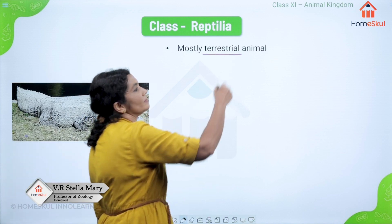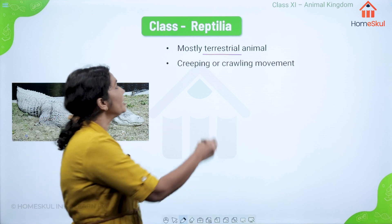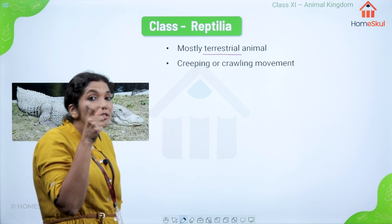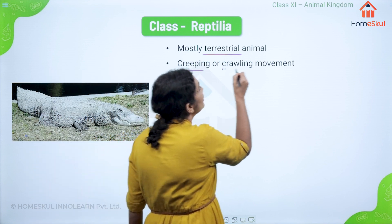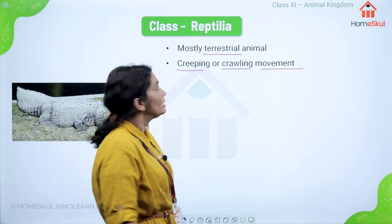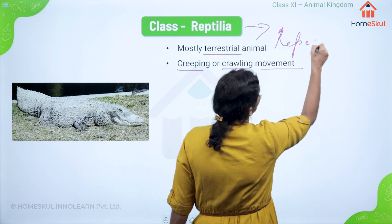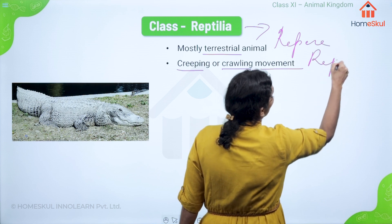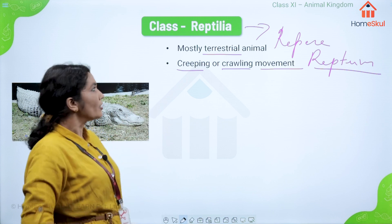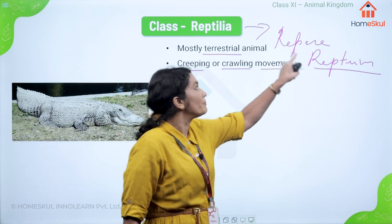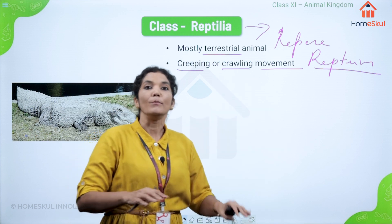Reptilians are mostly terrestrial, though some live in water. A key characteristic feature is that they show creeping and crawling movement. The word Reptilia comes from the Latin word Repre or Reptum, which means creeping or crawling movement.